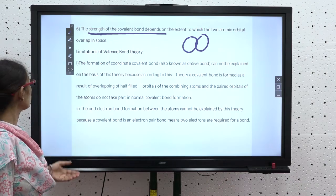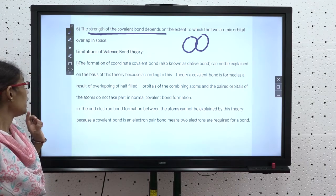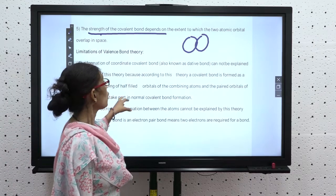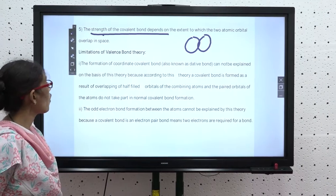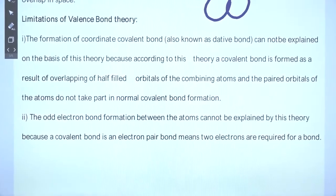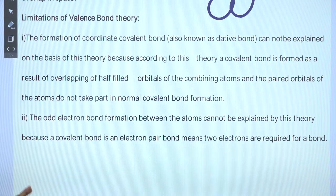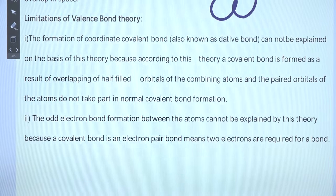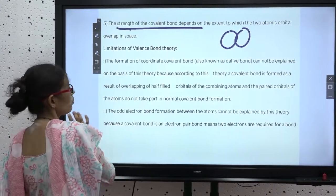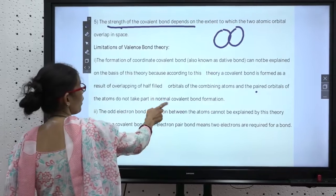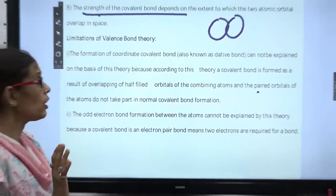However, the formation of a coordinate covalent bond — also known as a dative bond — cannot be explained on the basis of Valence Bond Theory. According to this theory, a covalent bond is formed as the result of overlapping of half-filled orbitals of the combining atoms, and the paired orbitals do not take part in normal covalent bond formation. So coordinate bonds, which use a lone pair from one atom, are not explained by this theory.